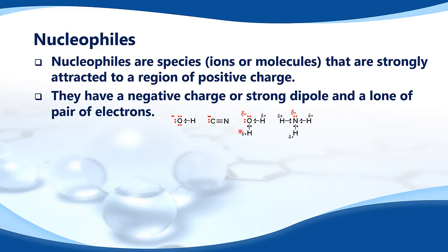Here we have a water molecule, it has two lone pairs of electrons on the oxygen and a strong dipole, negative on the oxygen end, positive on the hydrogen end. And then we have ammonia, which also has a lone pair of electrons on the nitrogen atom and it also has a strong dipole.